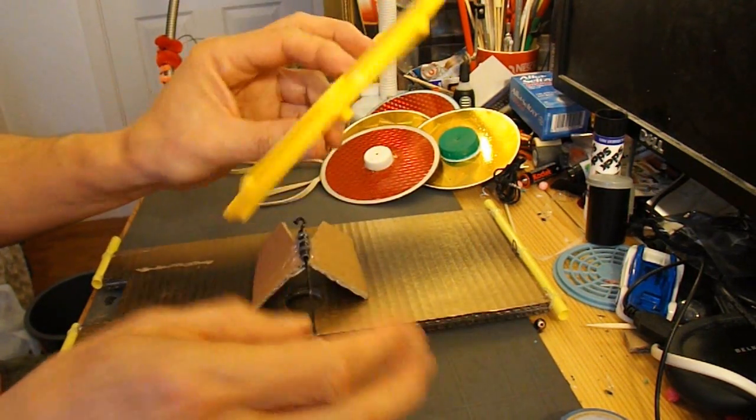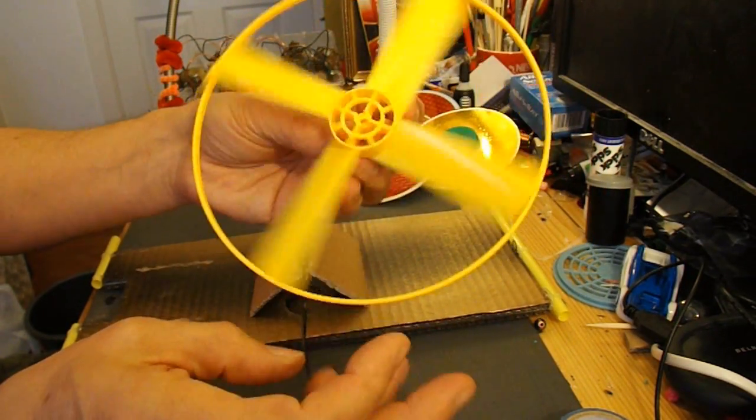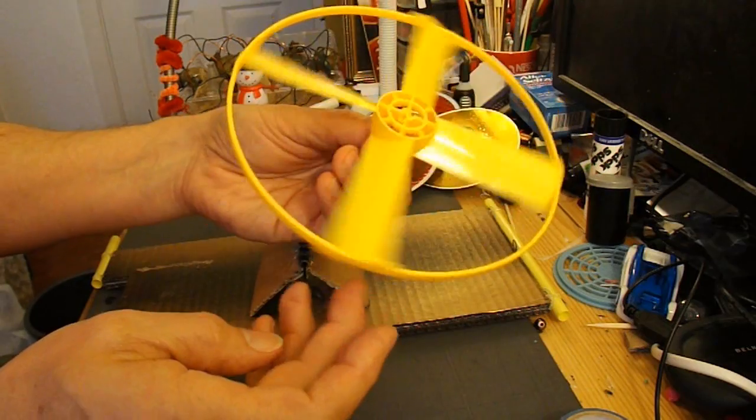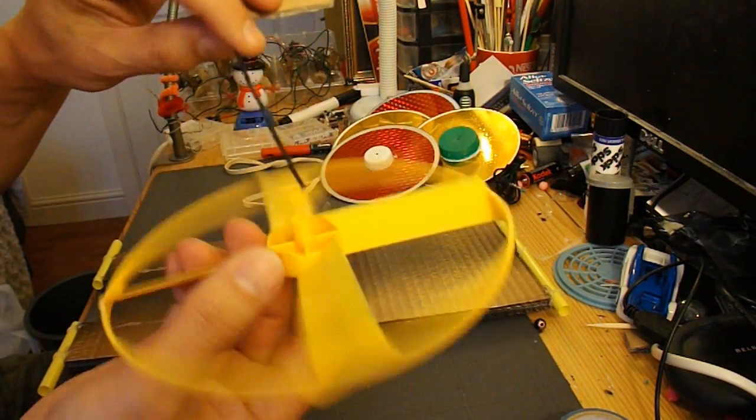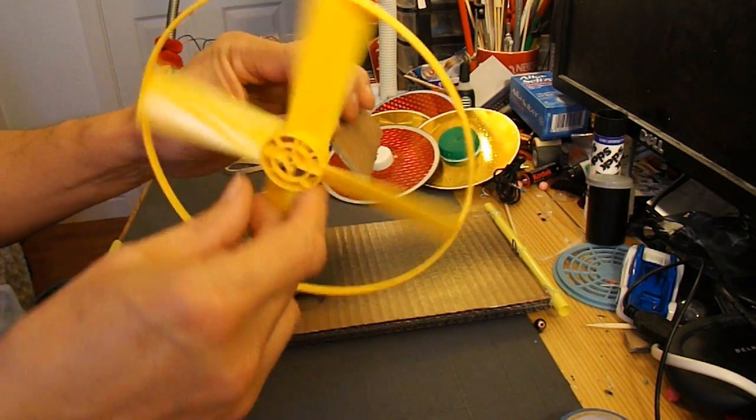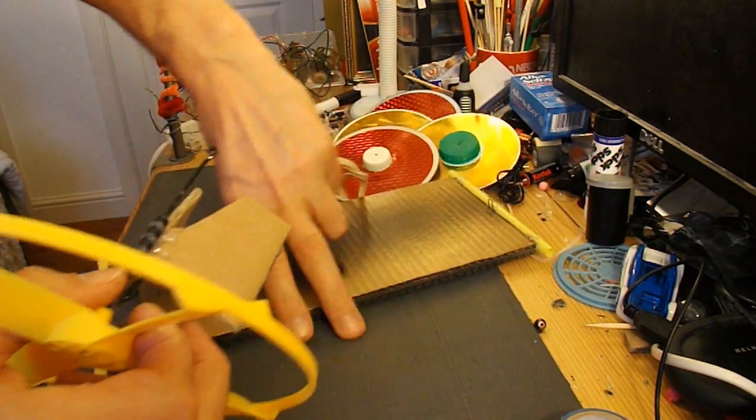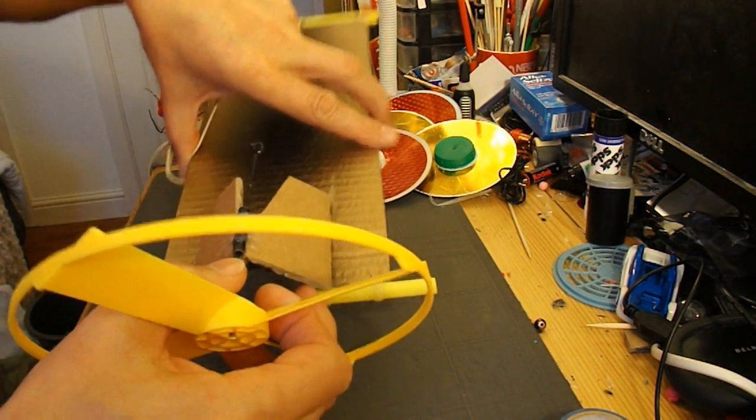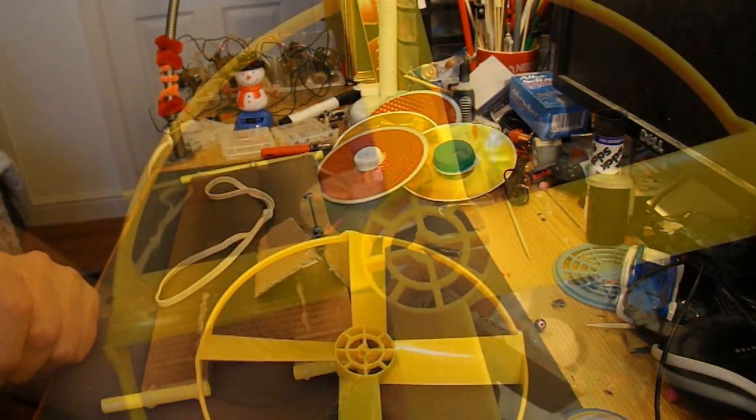So all I need to do is this fan blade, which comes from a toy helicopter. I need to modify it a bit but I can mount that on there. Attach a rubber band to the other side, attach that to the front there. Hot glue that in place, wind it up and let it go. And that should work.